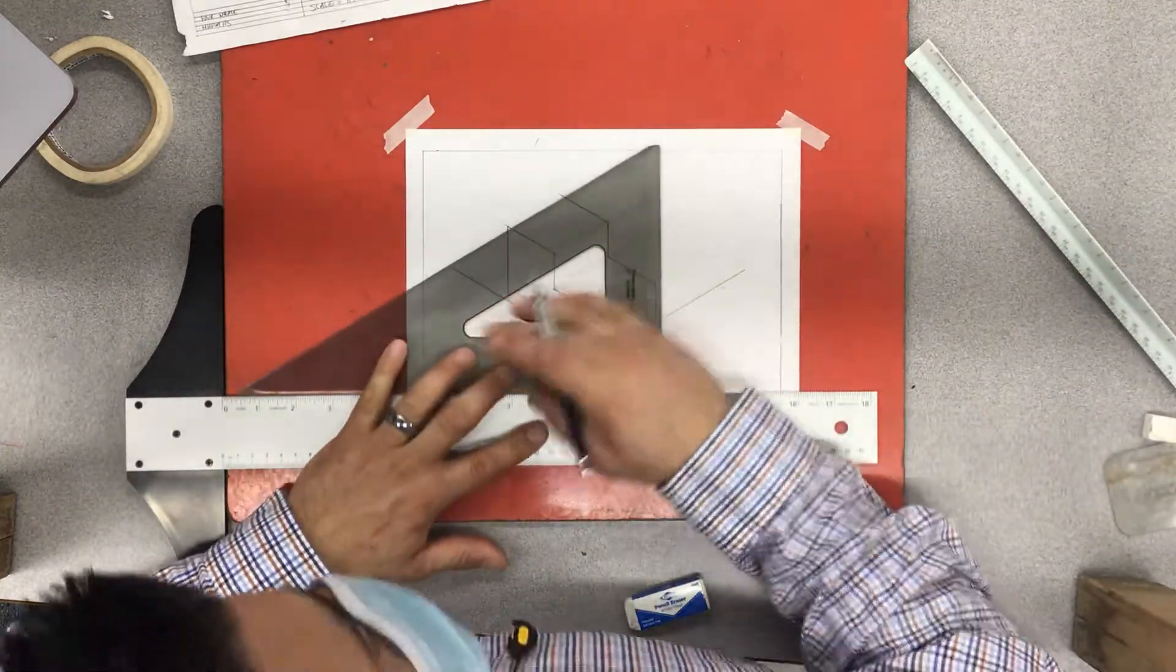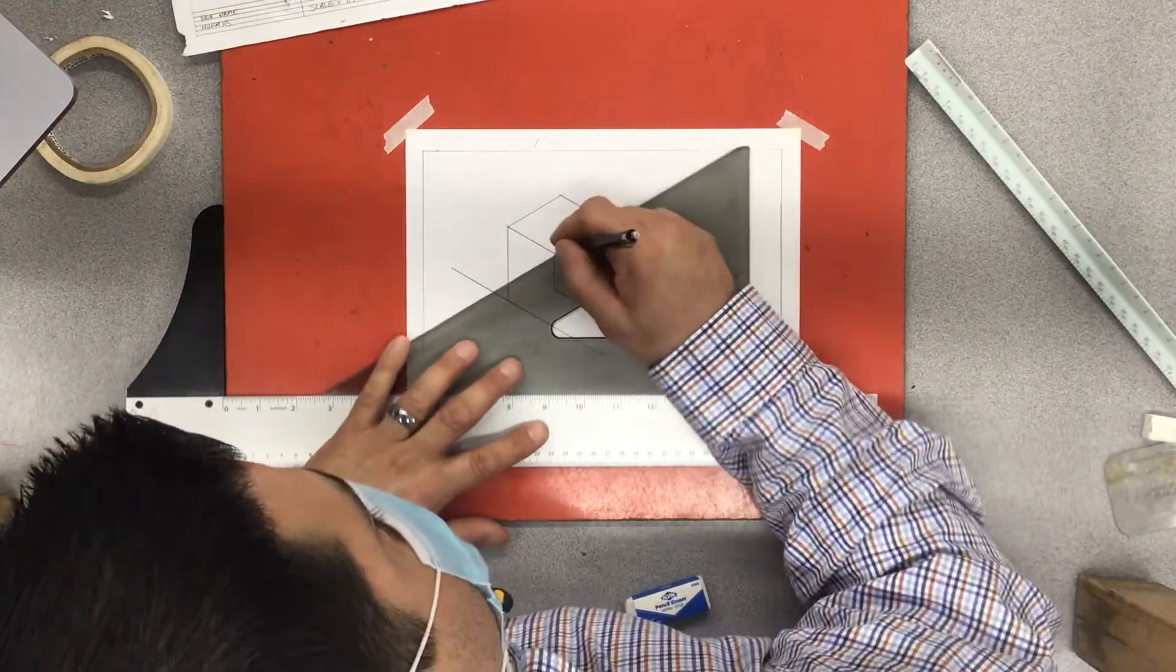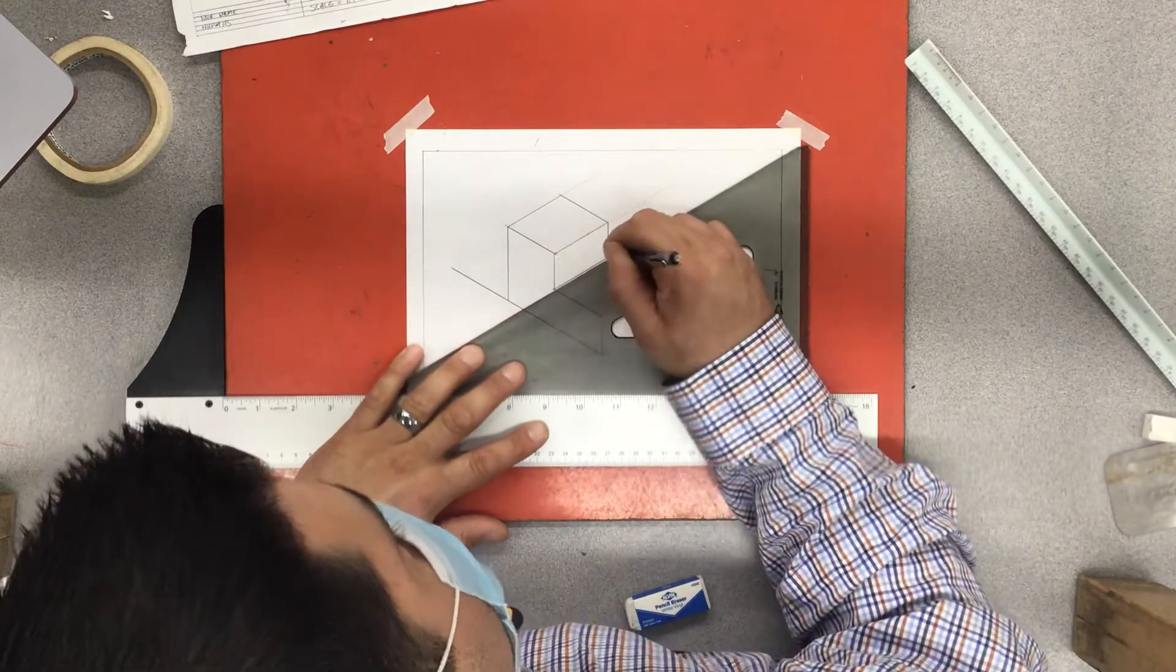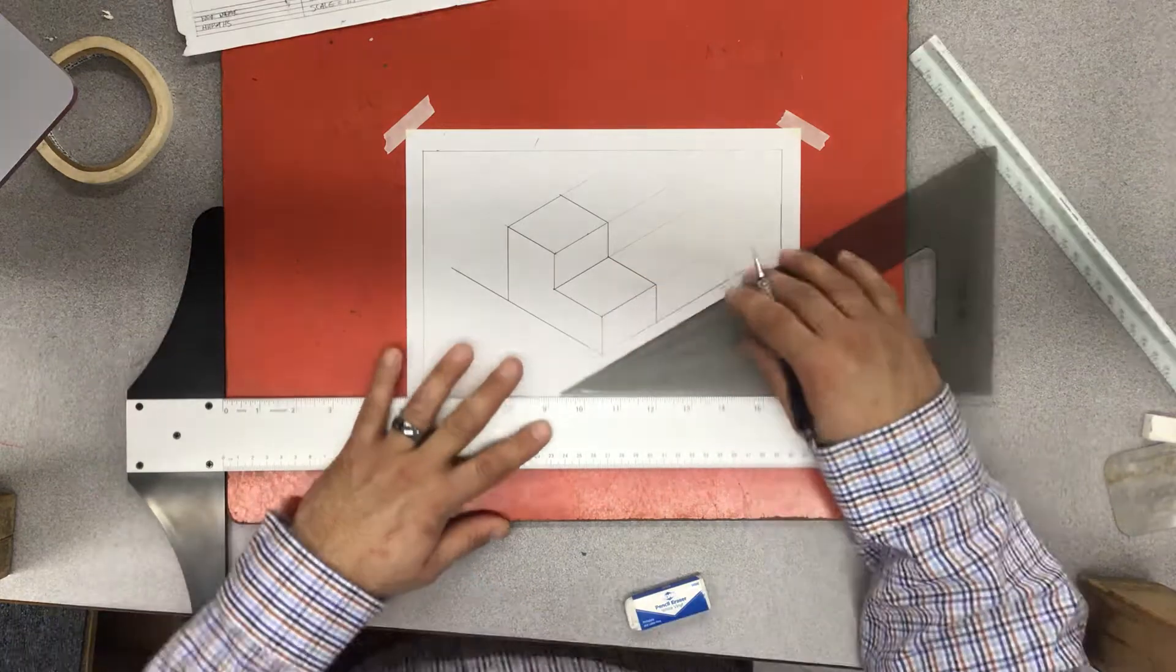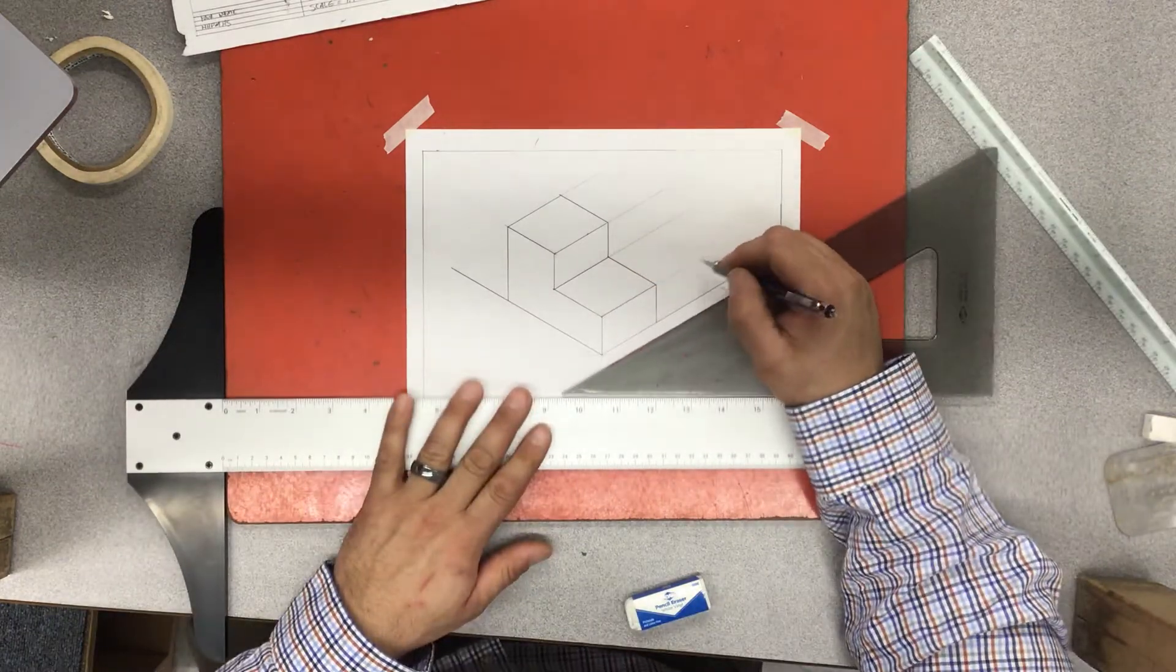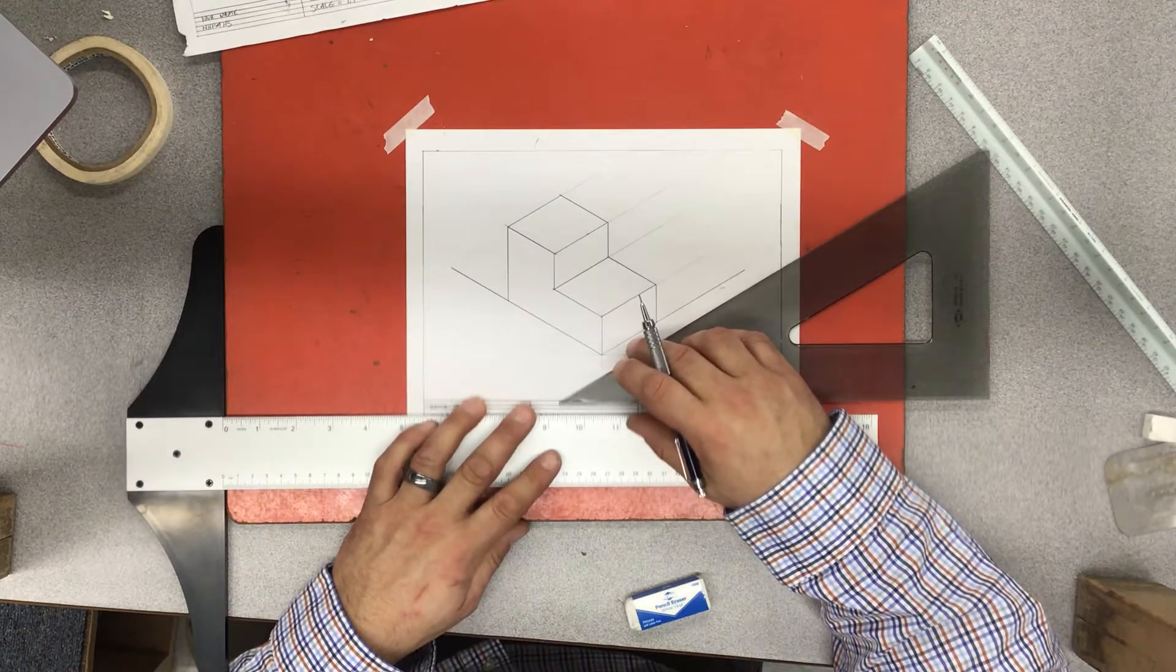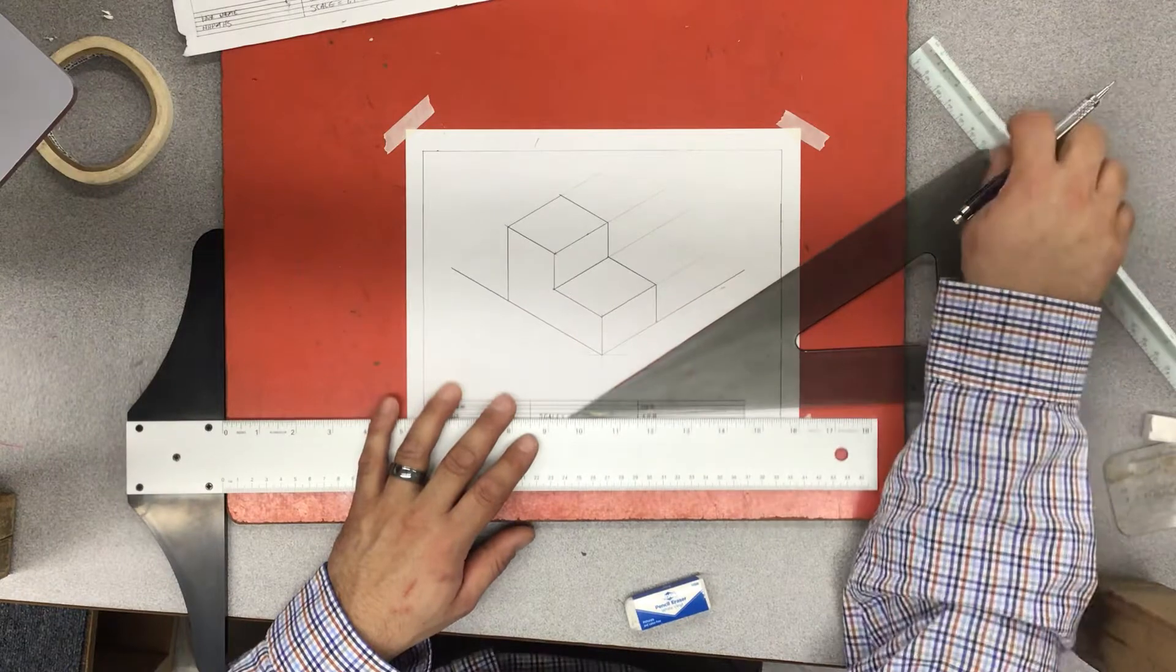In order to finish this part of the drawing up, I come over and I darken my lines. Now the cool thing about those extension lines that I drew, those long guide lines, I can use those as my extension lines for dimensioning my drawing.